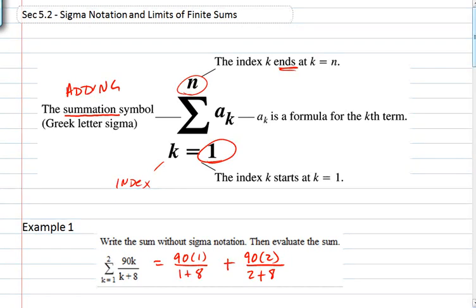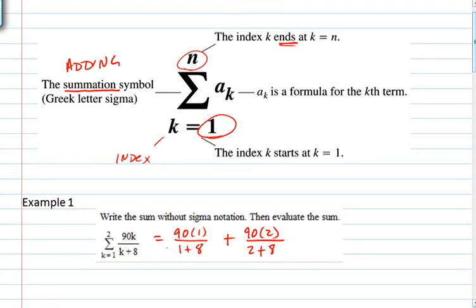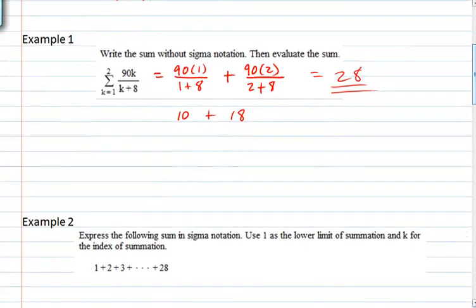So this is summation symbols and this is how you expand it. 90 times 1 is 90 divided by 9 and 90 times 2 is 180 divided by 10. So this sum is equal to that's the value of that sum.